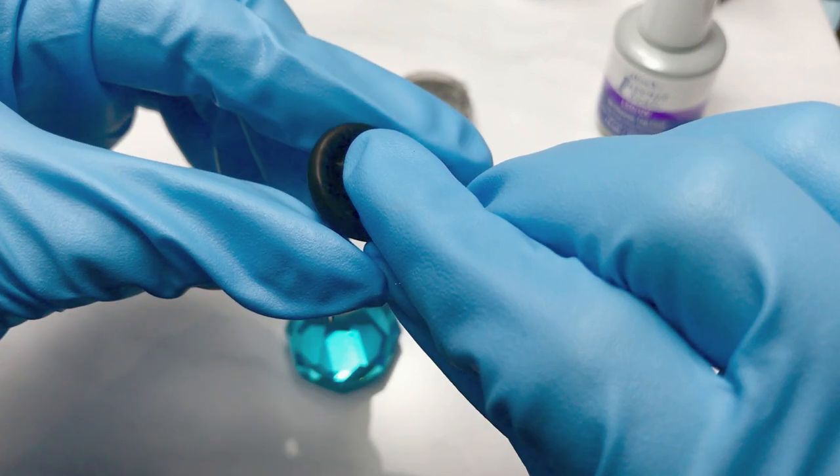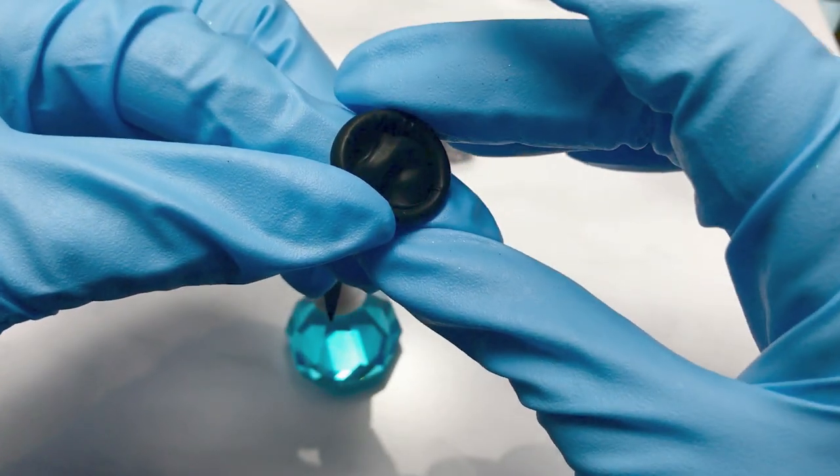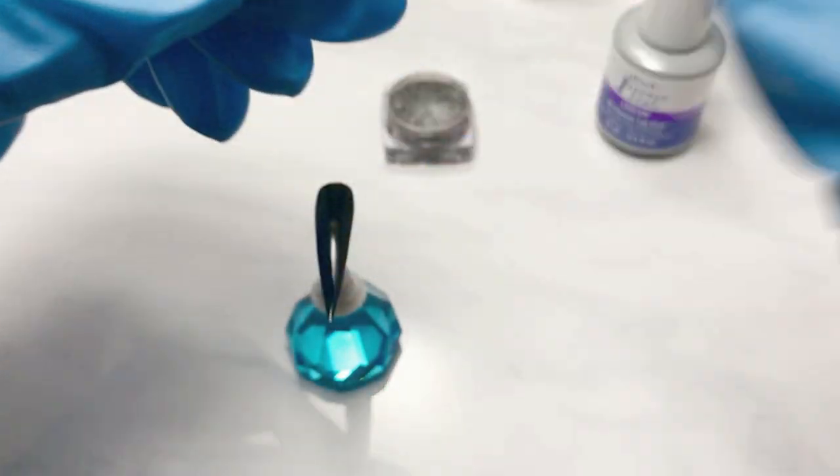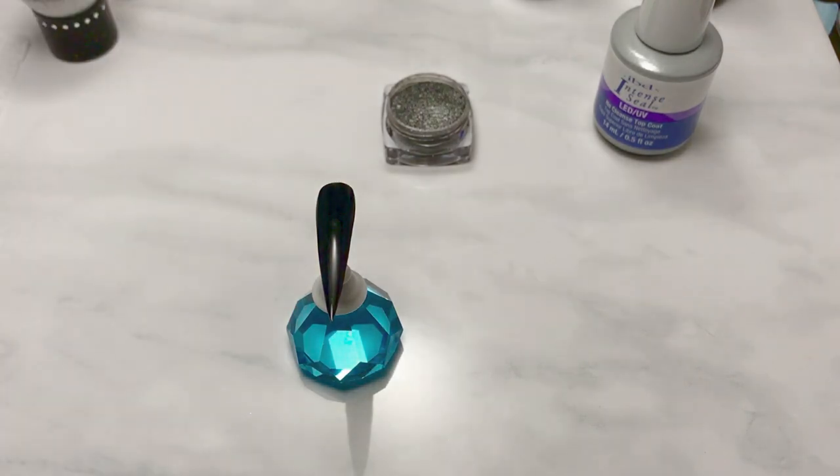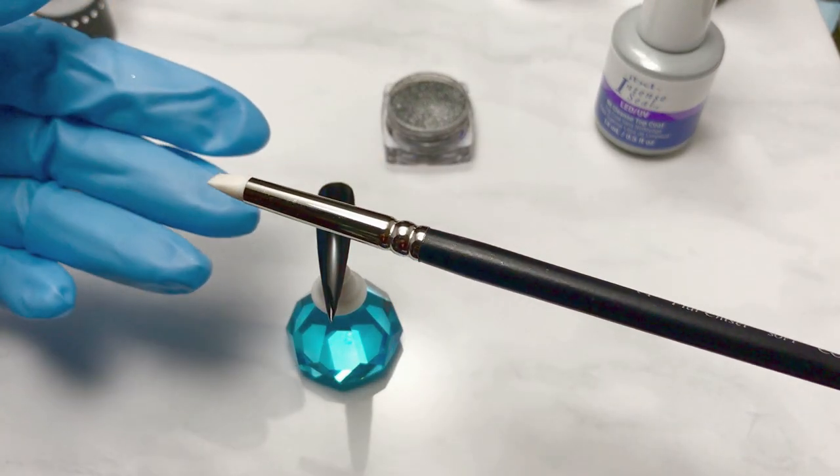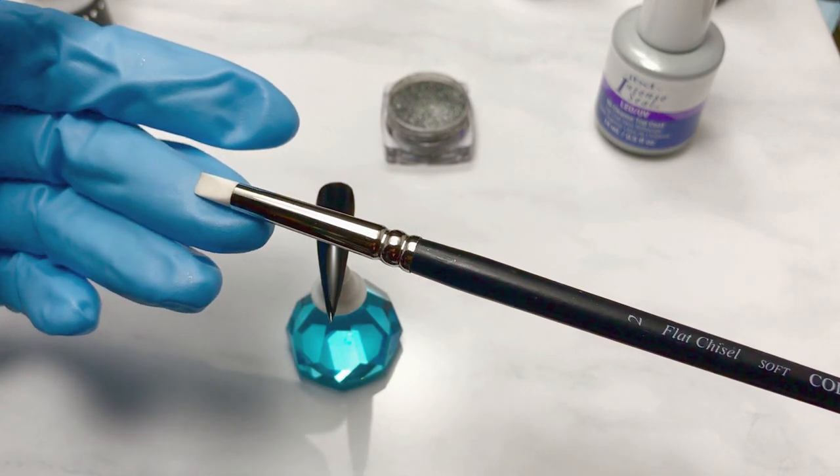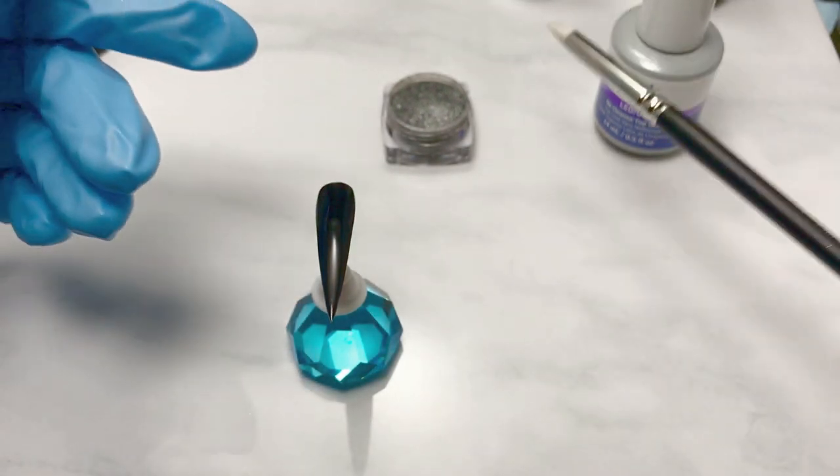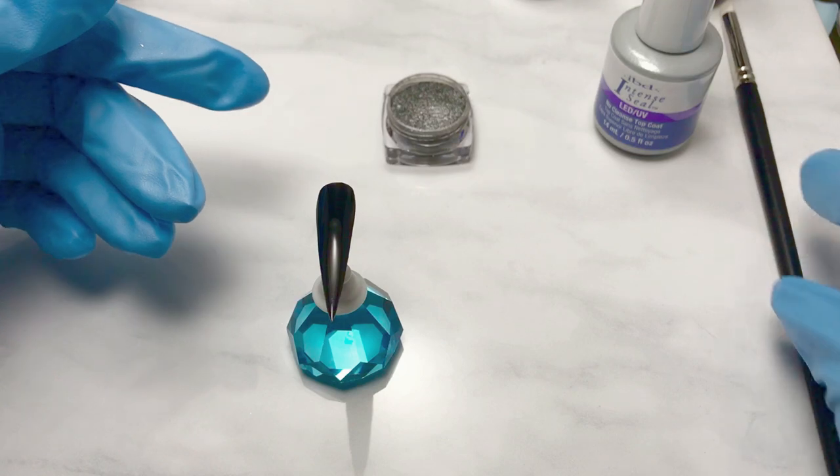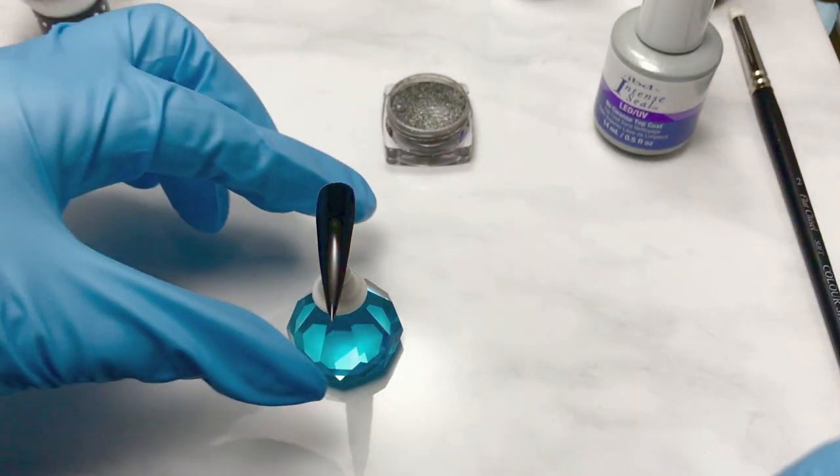I will be using to apply the pigment the finger cot that Angela provides with your purchase. And once I get the pigment onto the nail with that, I'll be using the silicone tool just to give it a final burnishing to get the most out of the shine from this pigment.